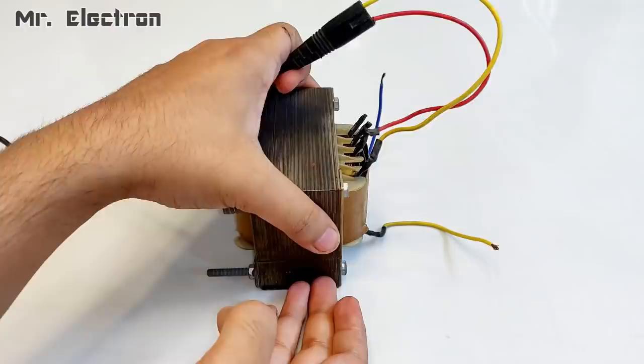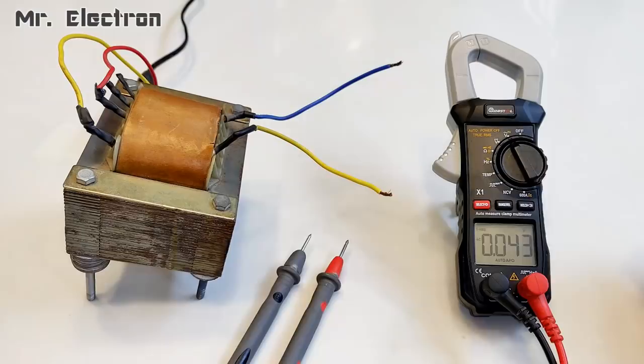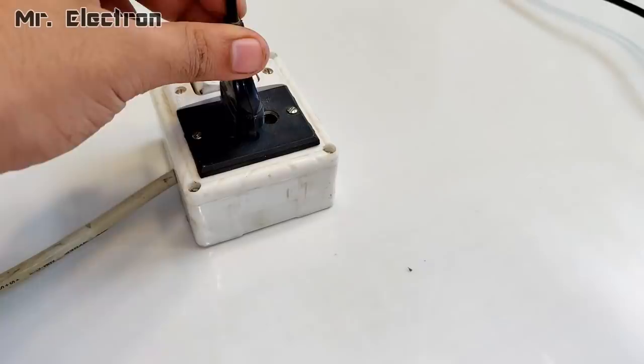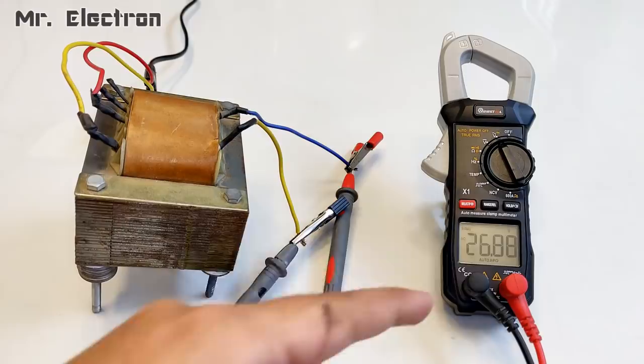Now I am connecting it to 220 volts AC supply, and to the output low voltage side I am connecting a multimeter to measure its output voltage. Connecting it to the socket and turning the mains supply on. Keep watching the multimeter—you can see that the output voltage is around 27 volts.